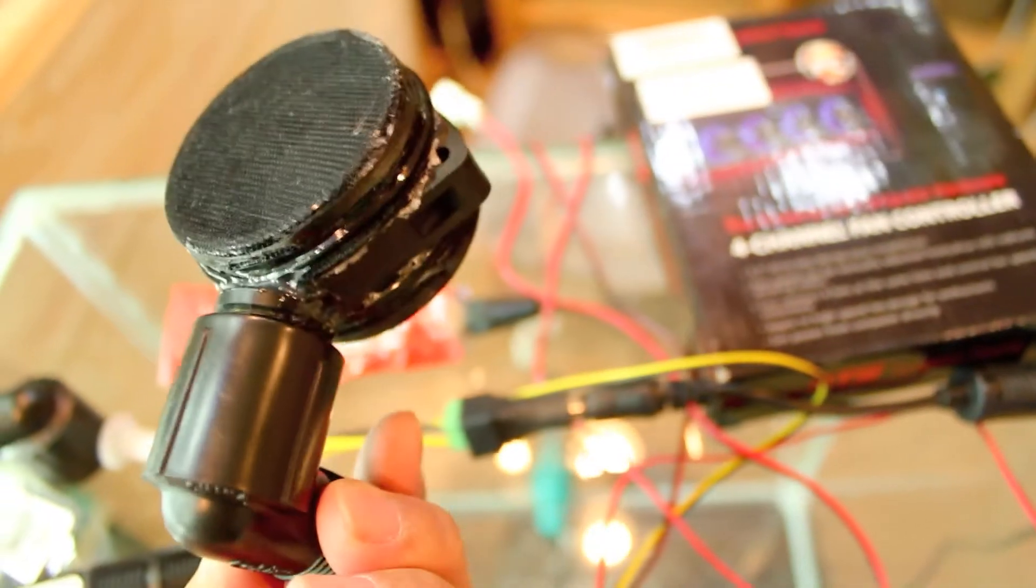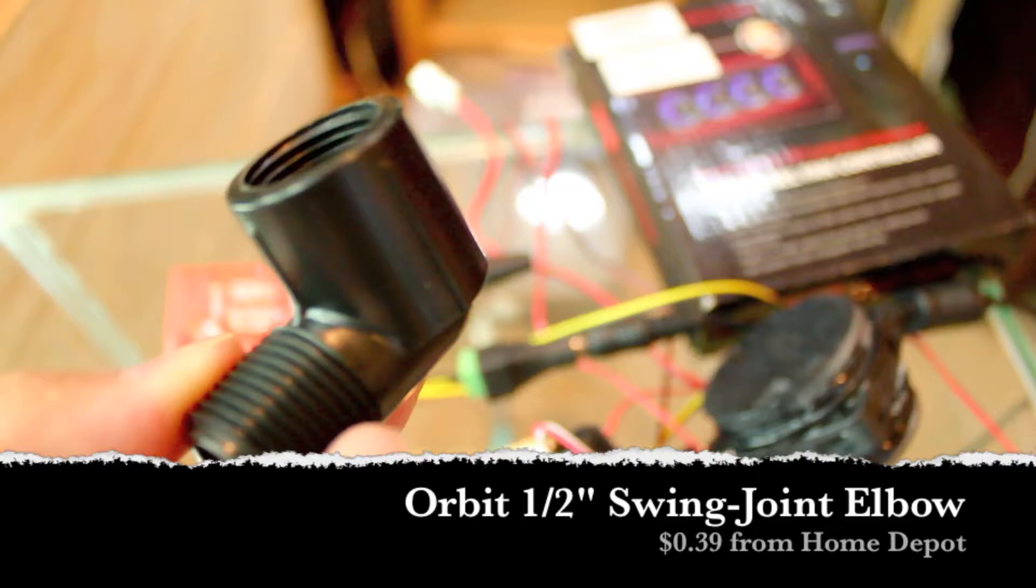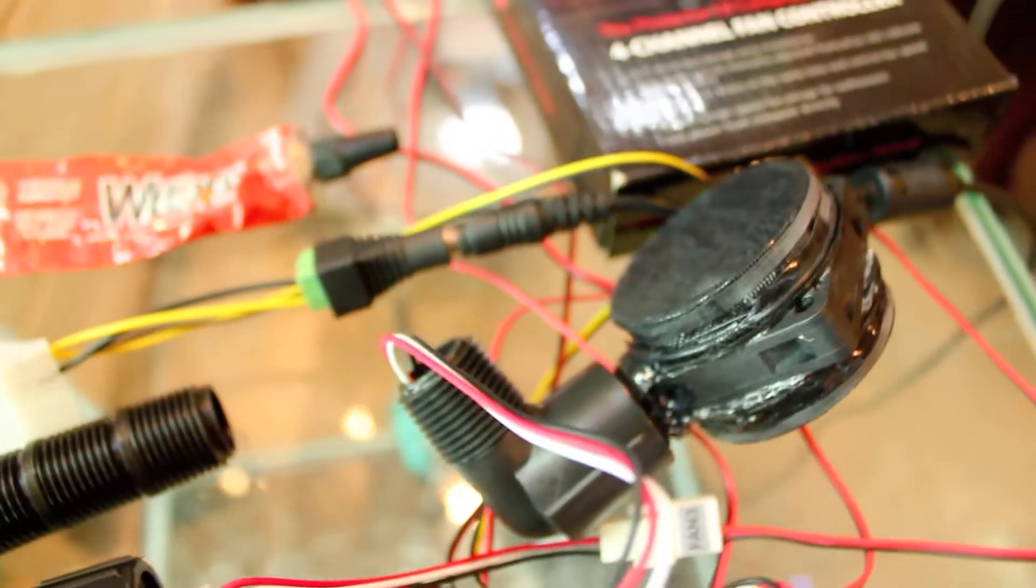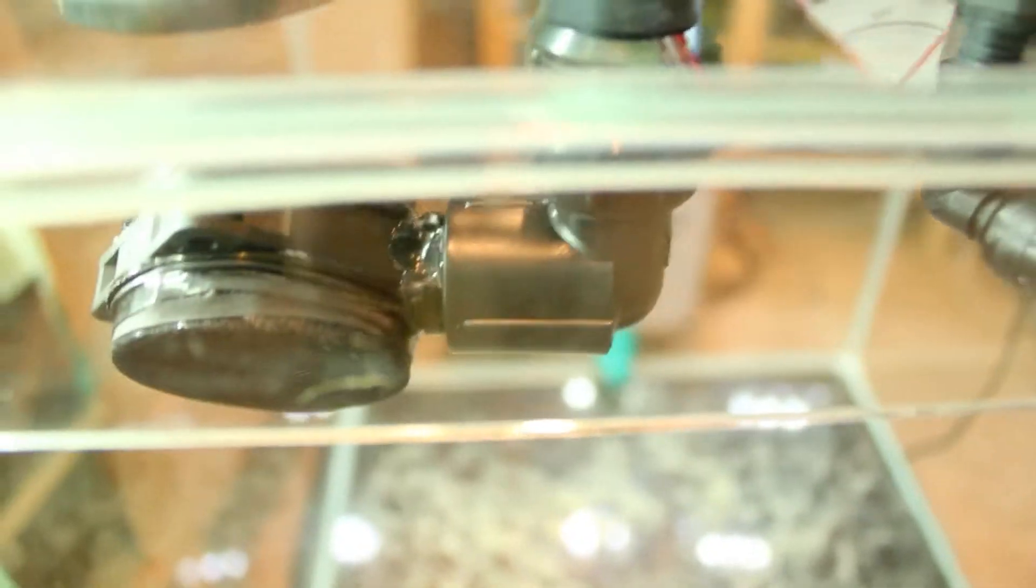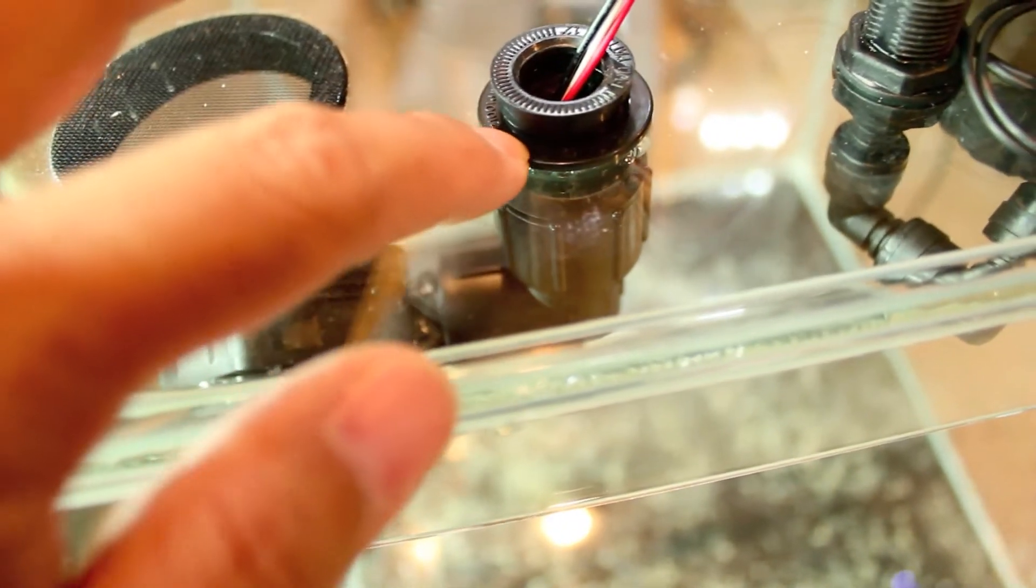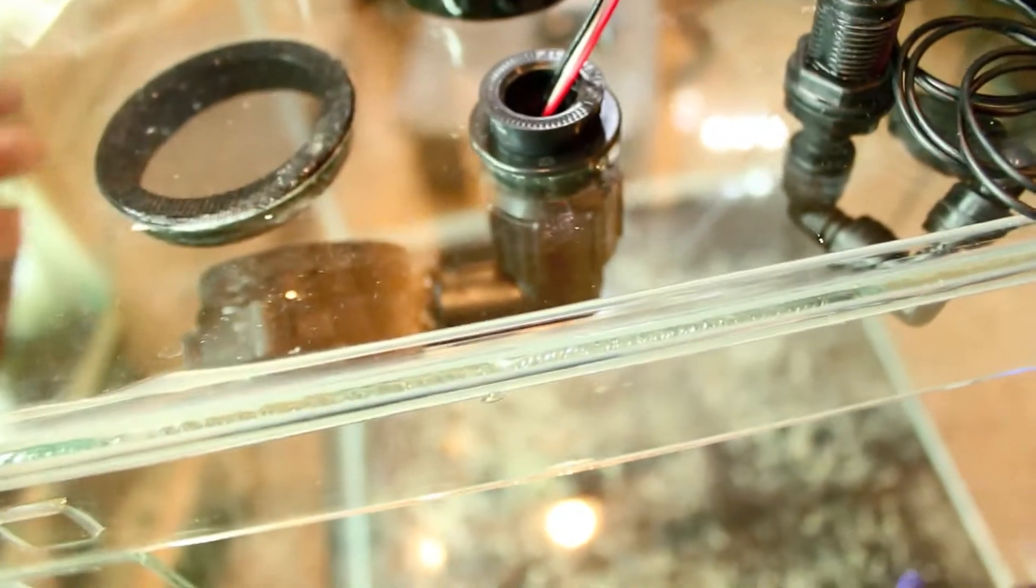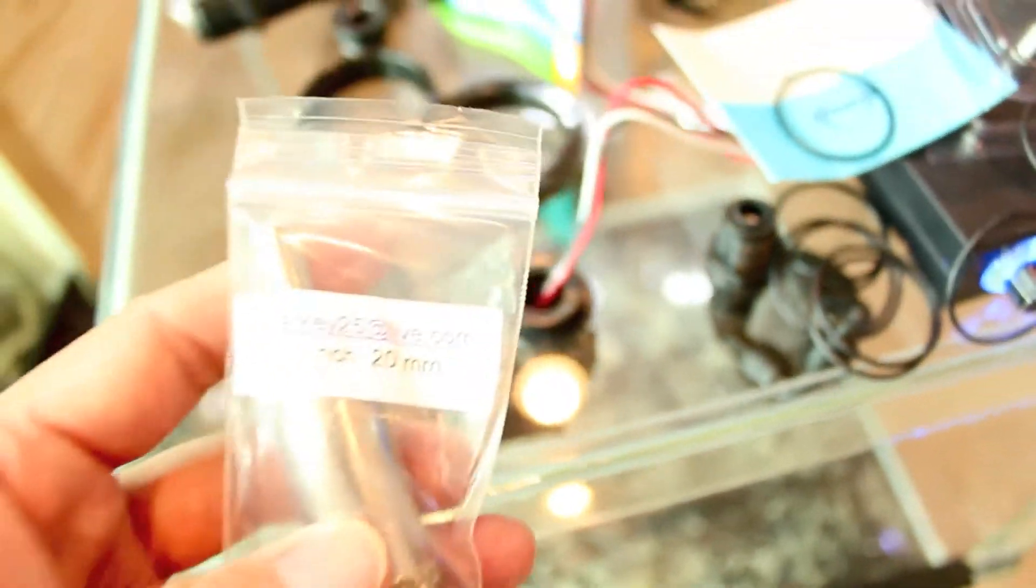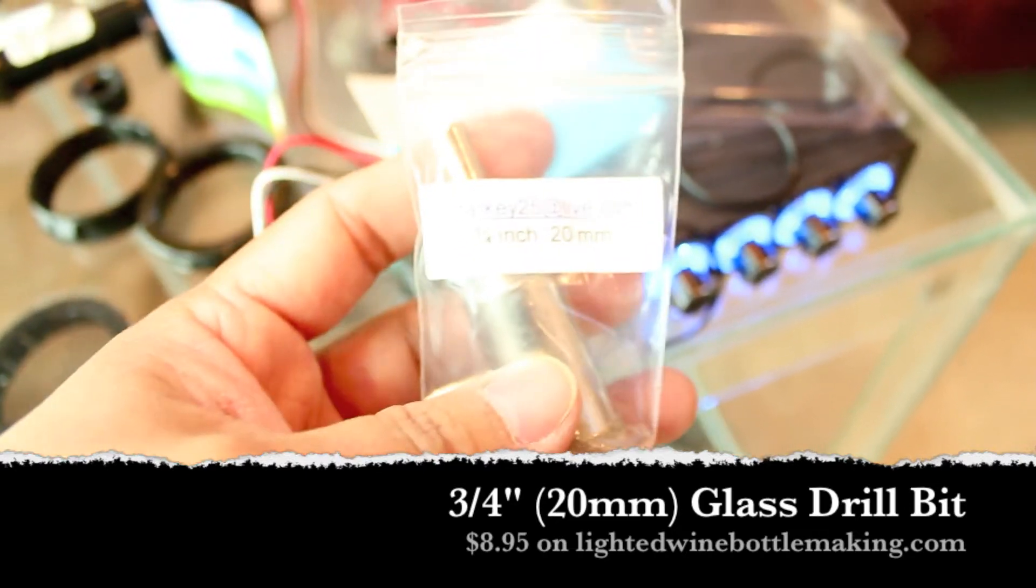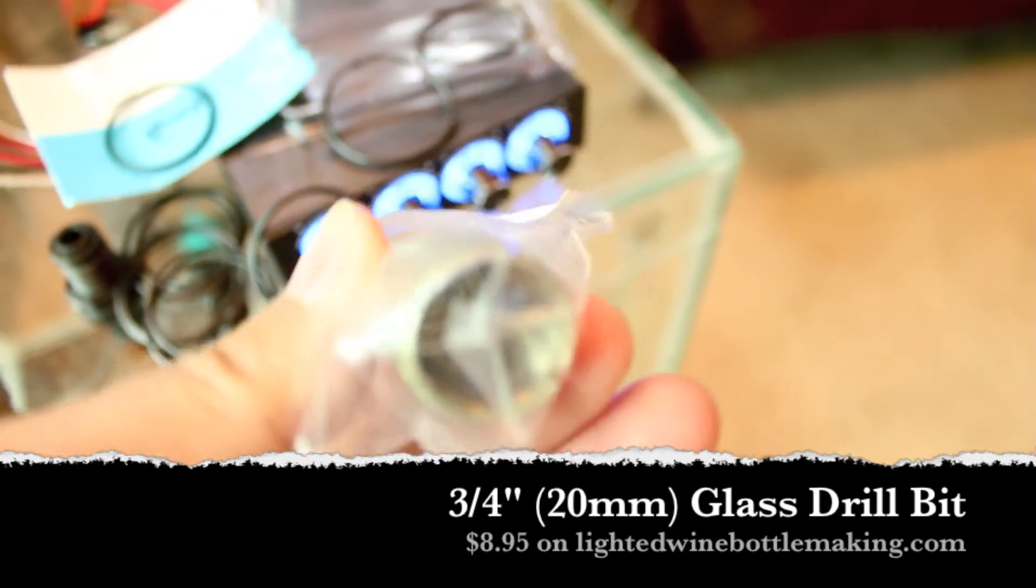And then I took one of these half-inch swing joint elbows and I screwed that on the end. Then I needed to find a way to connect it to the top here in the glass. I figured, well, in this case I'm actually using a snap-in for a 1-inch hole, so a snap-in bushing for a 1-inch hole. But later on I'm probably just gonna drill holes with this—don't know if you can even read that—but 3/4-inch or 20-millimeter glass drill bit here.